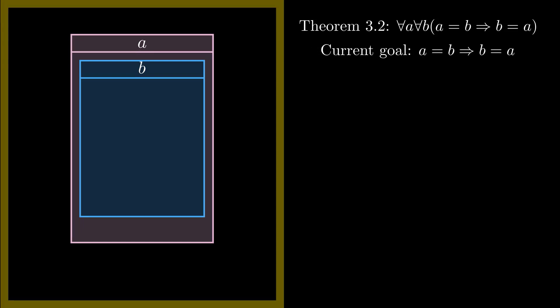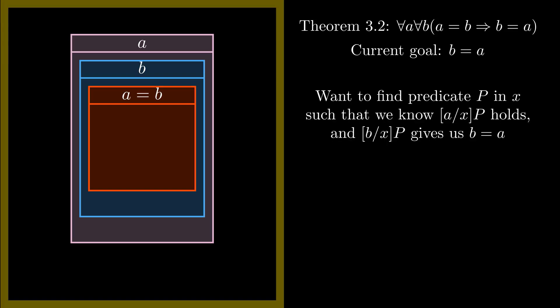We have another for all expression inside, so we introduce the variable for that one too. Then we have an implies expression, so we draw another box with the assumption that a equals b. Now we want to prove that b equals a. We know from our elimination rule for equality that since a equals b, any property that a has, b also has. We want to find some property that a has, that when applied to b, gives us b equals a. Well, how about the property of being equal to a? We write this property as the predicate x equals a in the variable x.